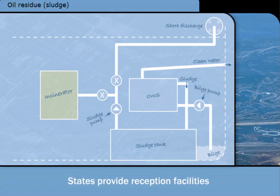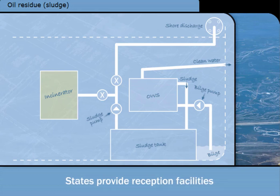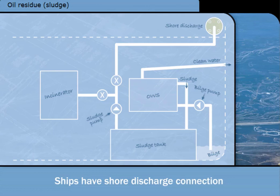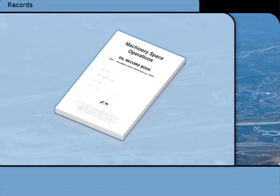In exchange for cleaner seas and beaches, the states which have signed the convention are required to provide reception facilities for the oily mixtures that ships are banned from discharging into the sea. To make discharge ashore easier, each ship must have a pipe to deck with a standard discharge connection available. Ships certified under MARPOL Annex 1 must carry an Oil Record Book Part 1 — Machinery Space Operations. The record book contains a list of the operations to be recorded and the codes to use when making entries.